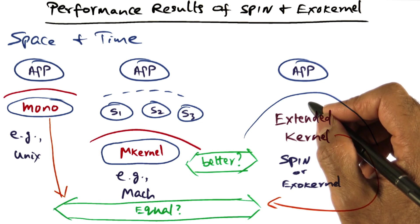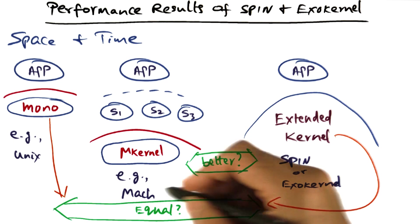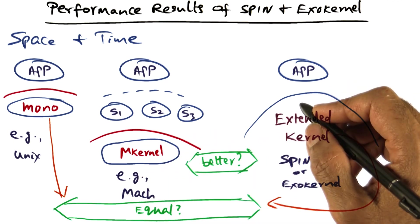That is, when you go from one protection domain to another, how well are you doing? For that, both spin and exokernel exceed the performance of Mach.